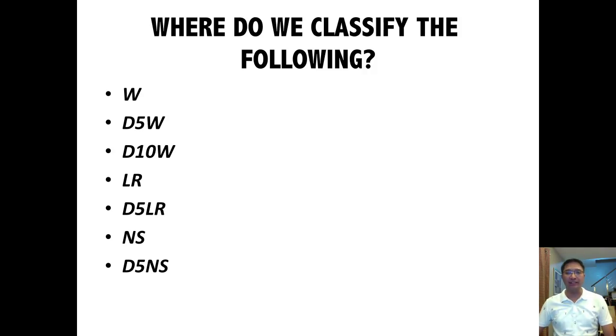Where do we classify the following: W, D5W, D10W, LR, D5LR, NS, and D5NS?